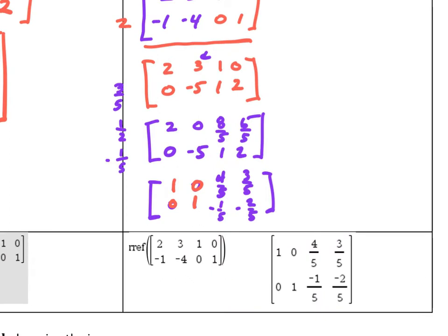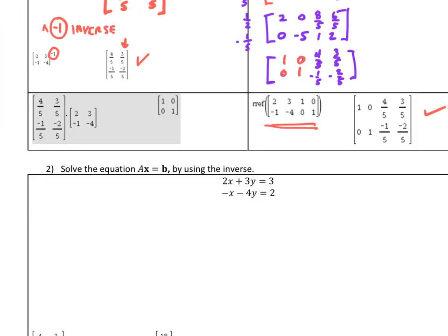Whatever remains on the right side is A inverse — and sure enough, it's identical to what we found before. On the calculator you can also do reduced row echelon form on this matrix and get the same result. Note that A inverse times A equals the multiplicative identity matrix, and similarly A times A inverse equals the identity as well.